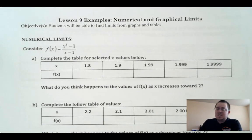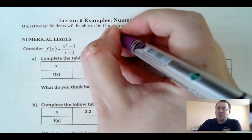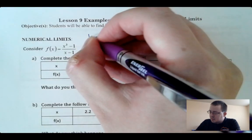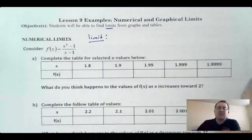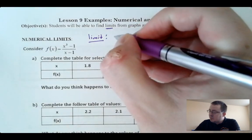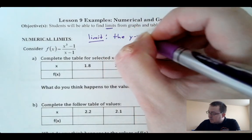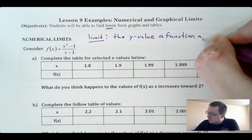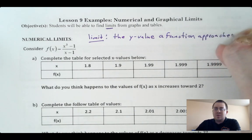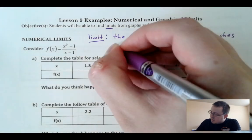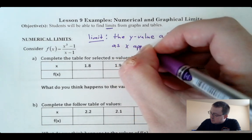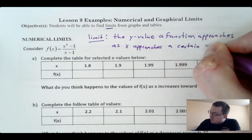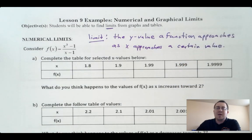Our objective for today is to be able to find something called limits from graphs and tables, numerically and graphically. So first off, what is a limit? It's one of the major things that we study in calculus. Well, the limit's really easy — it's just the y value that a function approaches as x approaches a certain value. So what does y get close to as x gets closer to something?